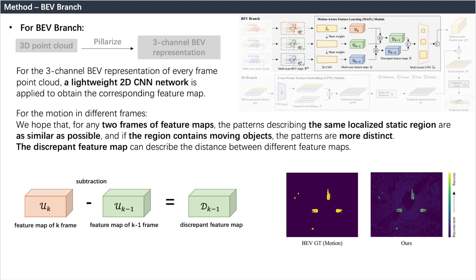The discrepant feature map can describe the distance between different feature maps. Therefore, as shown in the slide, we compute the difference of feature maps between frames to represent the motion state. The resulting feature map is called a discrepant feature map. After supervised learning, regions containing motion in the discrepant feature map will get higher activation values than static regions.